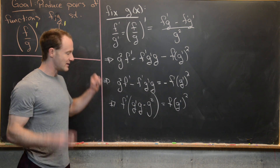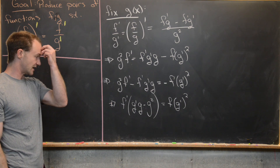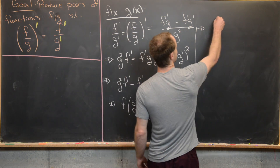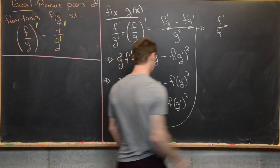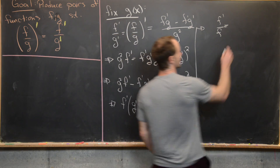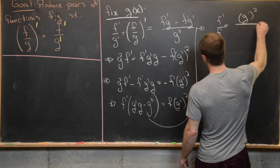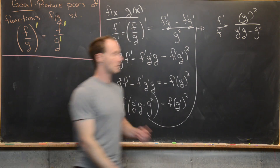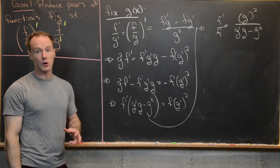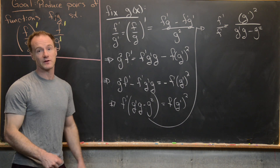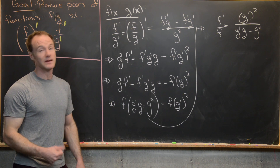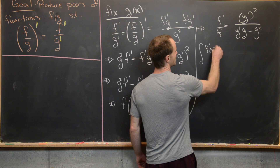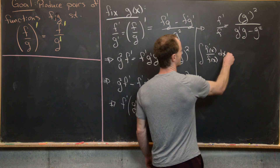Now we move all the g's to one side and all the f's to the other. That gives us f prime over f equals g prime squared over (g prime times g minus g squared). We then take the antiderivative of both sides with respect to x, so we have the antiderivative of f prime of x over f of x dx on the left, and the antiderivative of g prime squared over (g prime times g minus g squared) dx on the right.